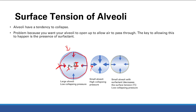Surfactant, shown here in yellow, breaks up the attracting force between the fluid lining the alveoli. Think of it like a teacher putting kids in between flirting couples in class — you're separating them, decreasing their attraction and disturbance. That's what surfactant does: it interrupts the attractive forces between the fluid molecules.